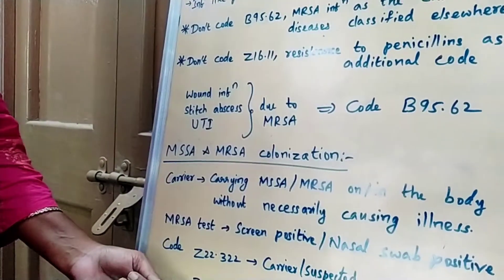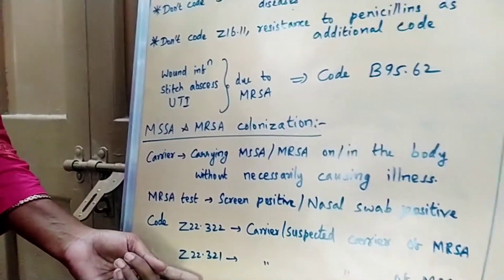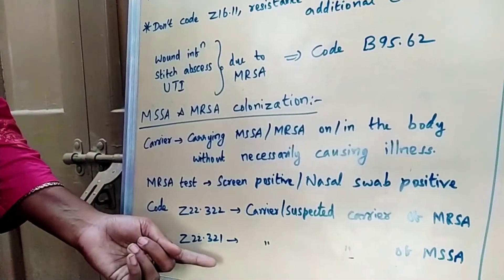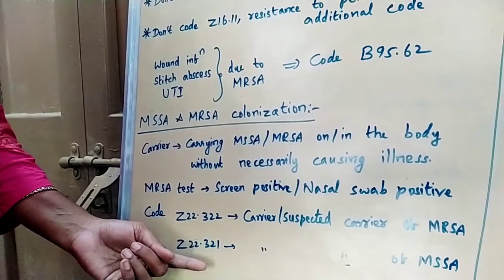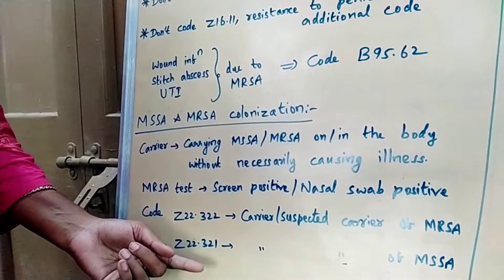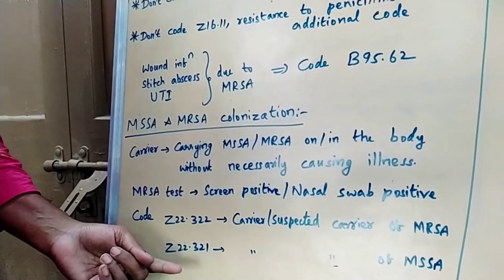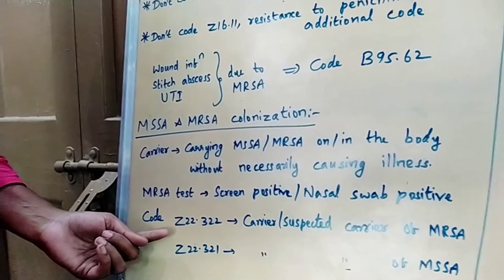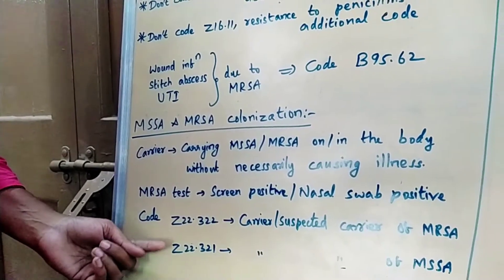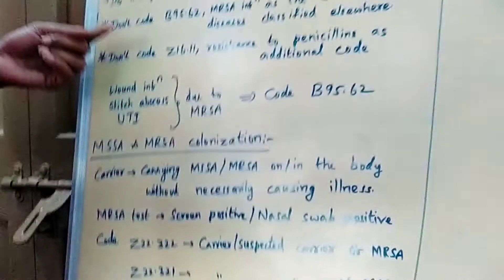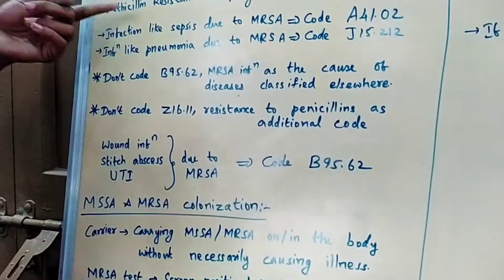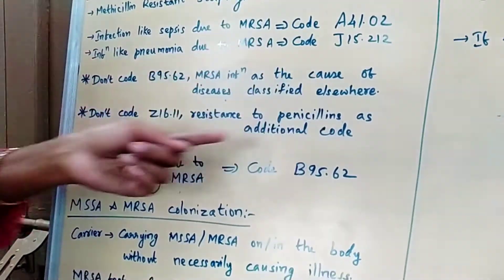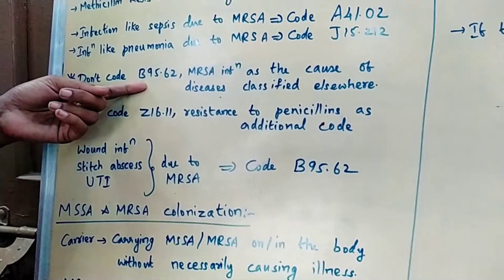If the colonization is MSSA, the code is Z22.321. I hope you are clear on MRSA and MSSA colonization — how to give codes, when to use Z codes, and when to give A codes, J codes, and B codes.